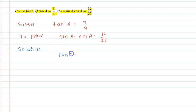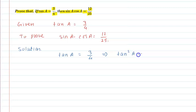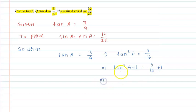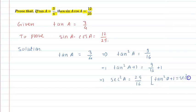So, tan squared A is equal to 9/16. According to the identity tan squared theta plus 1 is equal to sec squared theta, the right side becomes 9/16 plus 1, which gives us 25/16. So sec squared A equals 25/16, which means sec A is equal to plus or minus 5/4. Neglecting the negative sign, sec A is equal to 5/4.